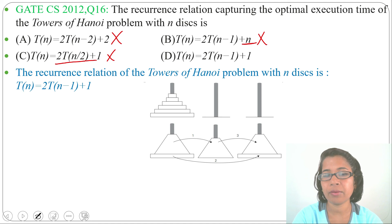Option D: T(n) = 2T(n-1) + 1, this is correct. So the answer will be option D, T(n) = 2T(n-1) + 1.